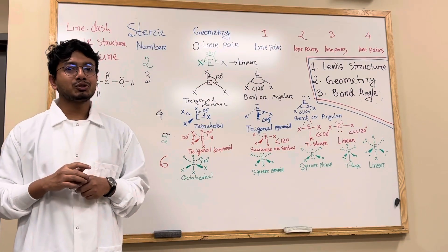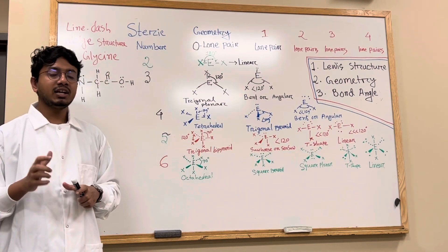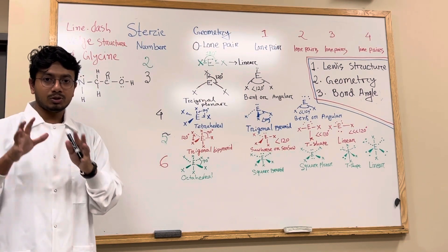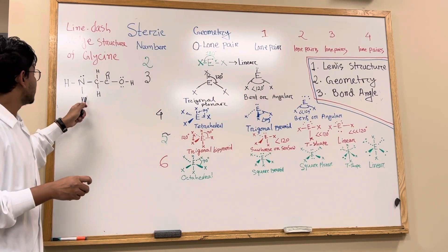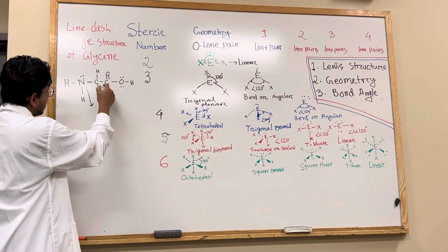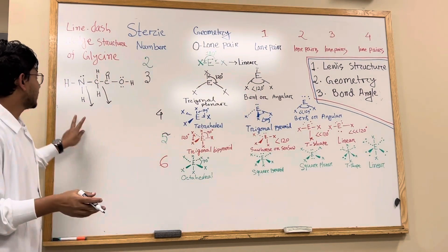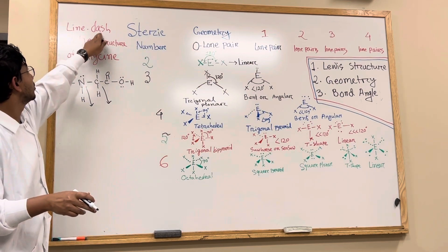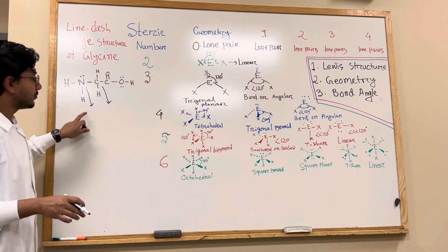In this video, I'm going to show you the Lewis structure of glycine. It is a little bit complex because it is a big compound. For a complex or big compound, first you need to figure out the central elements — here is nitrogen, here is carbon — then you can completely draw their structure, which gives you the Lewis structure, also called a line-dash-wedge structure.